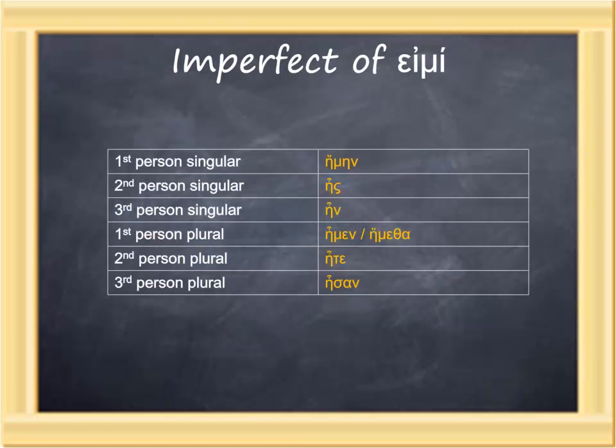The lesson provides one last example of the imperfect: that's our stative verb eimi. These forms are probably best treated as vocabulary words and just added to your vocabulary list. Please note that there are two different ways of forming the first-person imperfect plural of eimi: either ēmen or ēmetha—either form can occur.